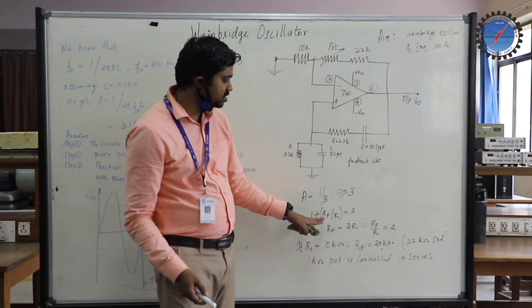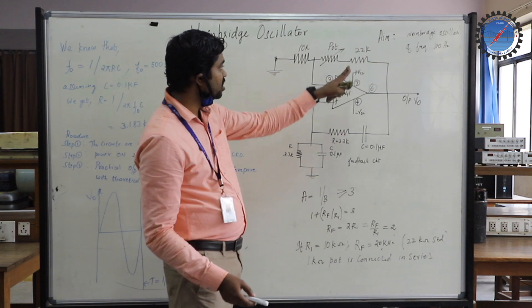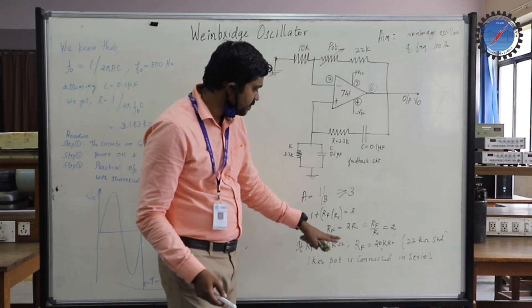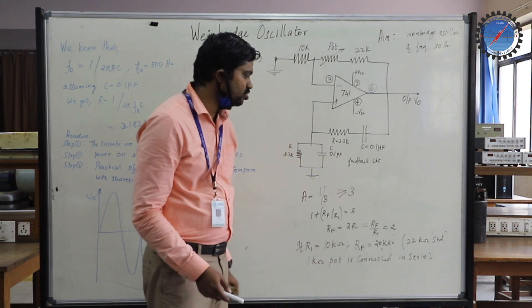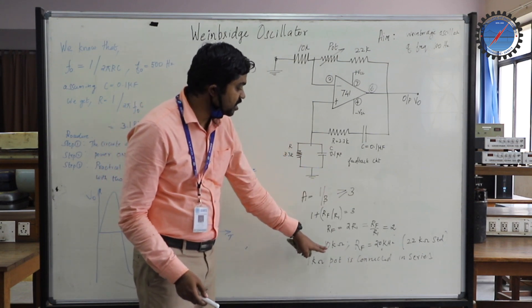So 1 plus R5 by R1, that is feedback resistance ratio by R1, equals 3. Therefore R5 equals 2R1. So R5 by R1 equals 2, and you get R1 is 10K.